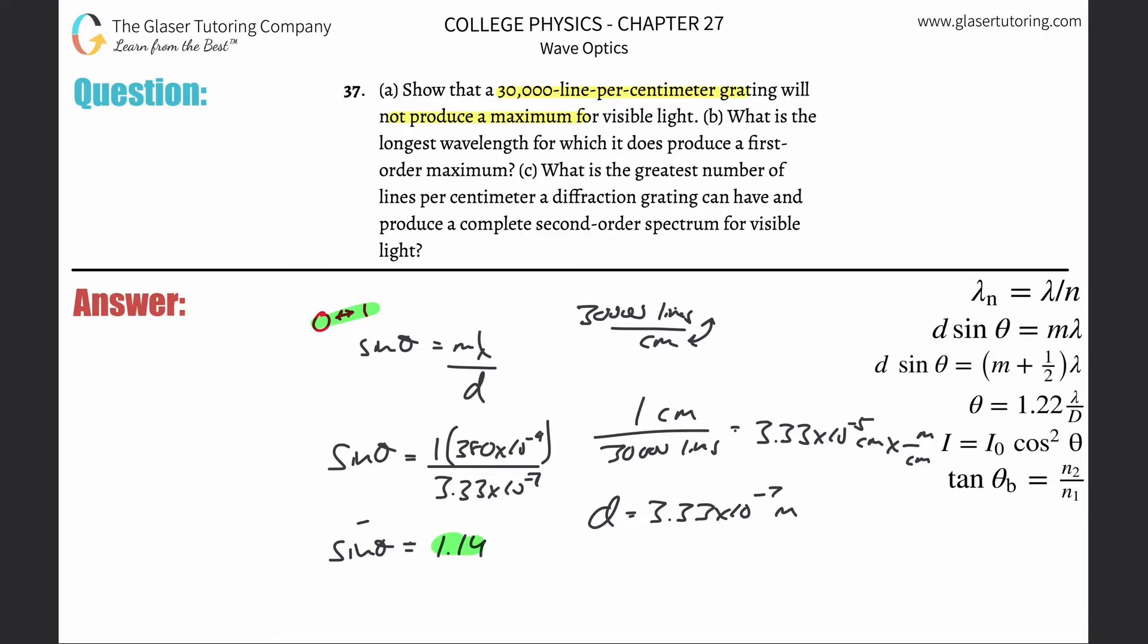This is not in between this range. And therefore, go ahead, plug it into the calculator. Try to solve this. Do inverse sine of 1.14. What do you get? Error. Right? This doesn't work. So there you go. That's why it doesn't produce a maximum. The angle is going to be too... Essentially, the angle is just too big. It just doesn't work. Not even that the angle is too big. It's just not defined. You know, you get the idea.